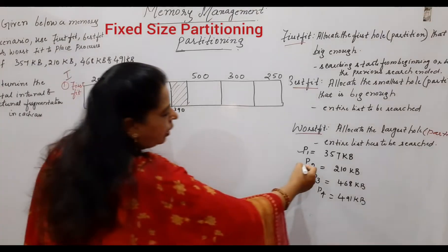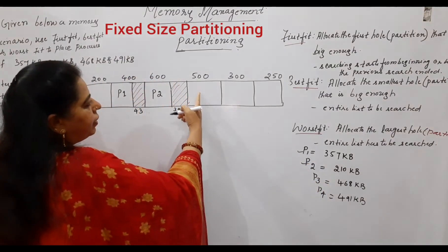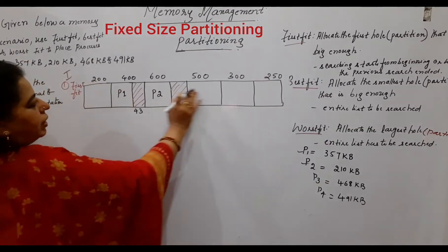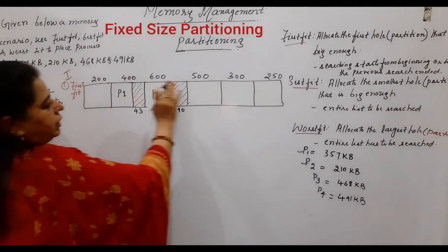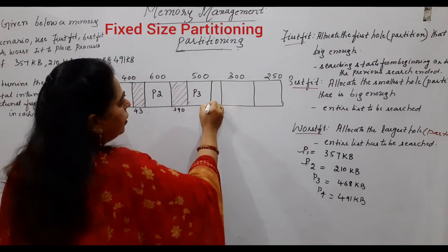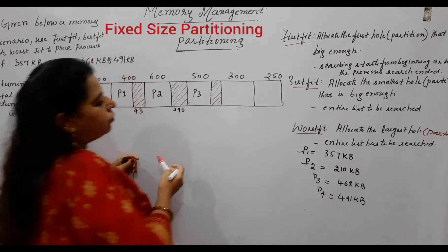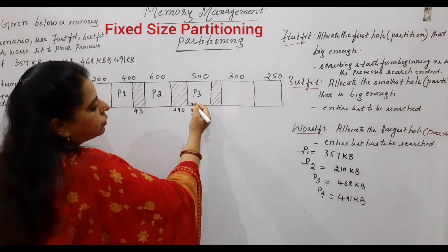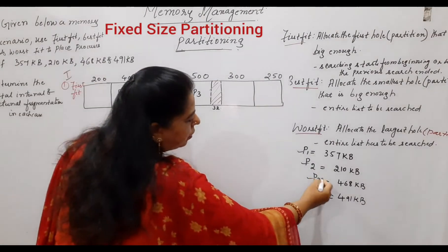Next, allocate P3 which is 468 KB. You cannot accommodate it in the 200 KB partition, so you go to the next available one. The first partition big enough is 500 KB — that is the first fit for P3. The leftover space is 500 minus 468 equals 32 KB.